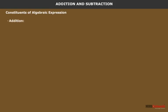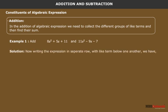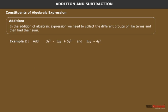Addition: in the addition of algebraic expressions, we collect the different groups of like terms and then find their sum. Example 1: add 8x squared plus 5x plus 11 and 11x squared minus 9x minus 7. We write the expressions in separate rows with like terms below one another. On adding, we get 19x squared minus 4x plus 4.